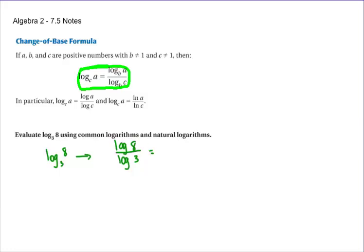If we wanted to look at it as a natural log, it would be the natural log of eight divided by the natural log of three. All it is is the big number on the top and the little number on the bottom with whatever base that you need to have.